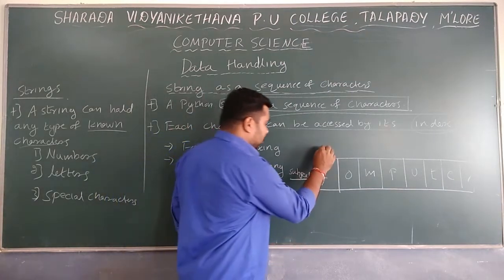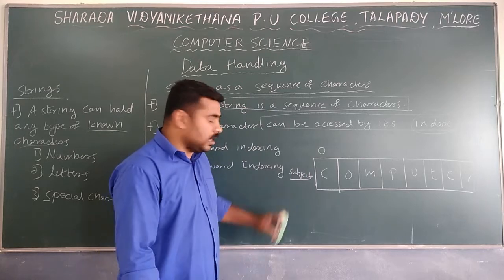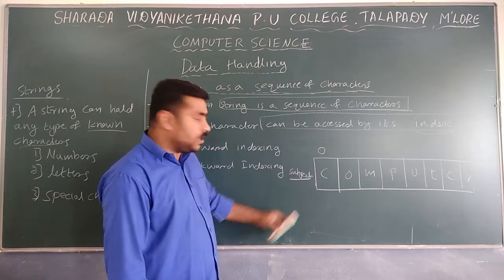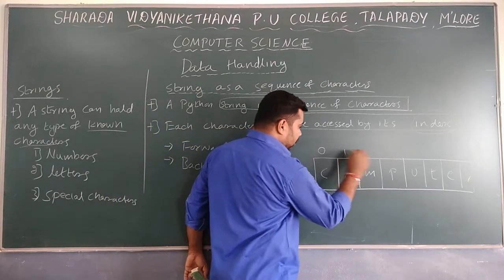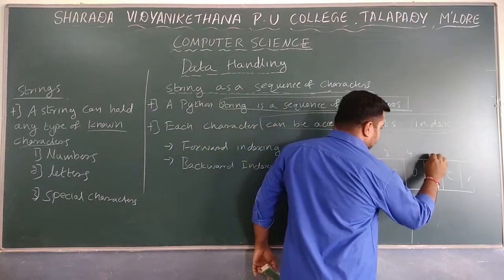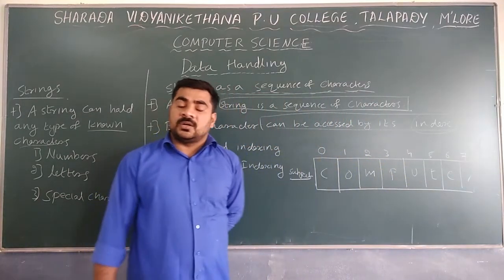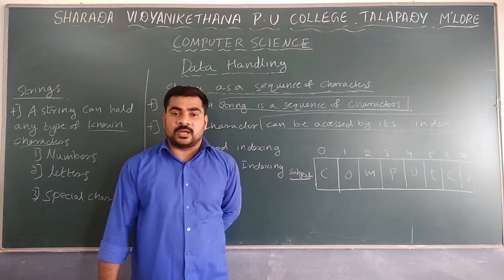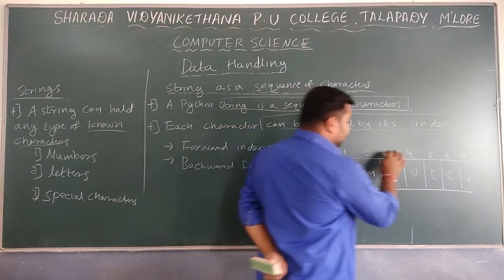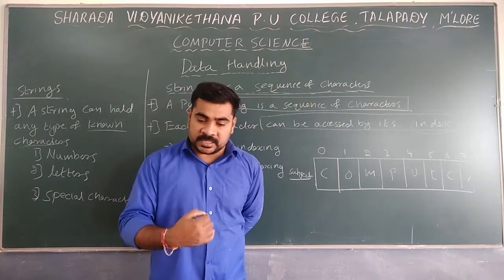Index always starts from 0. The starting location of the character — the starting index — is 0, then 1, 2, 3, 4, 5, 6, and 7. These are the total number of indices. By using this index we can access the data.